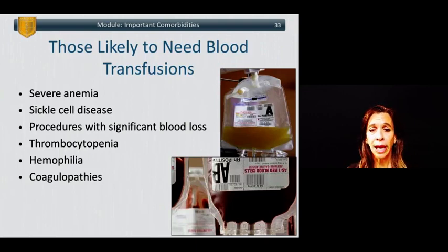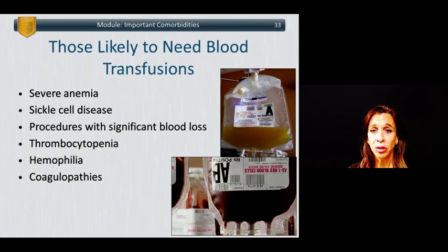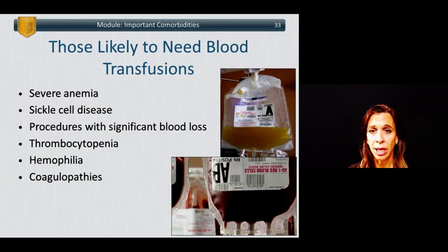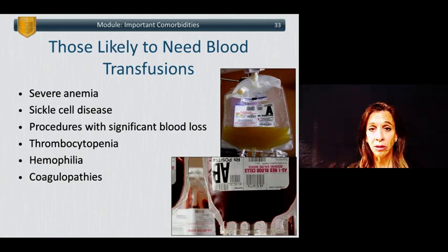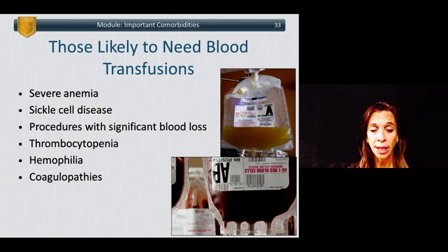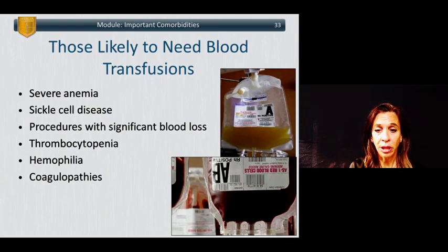Patients likely to require a blood transfusion are poor candidates for ambulatory surgery unless the center is prepared with blood. These include patients with severe anemia, sickle cell disease, patients undergoing procedures with significant risk of blood loss, patients with low platelet counts, hemophiliacs, or patients with known coagulopathies.